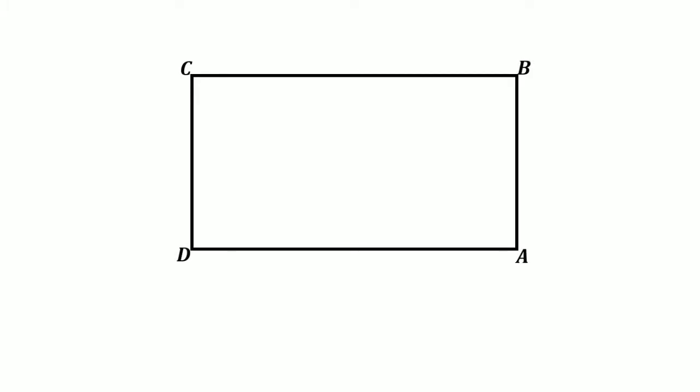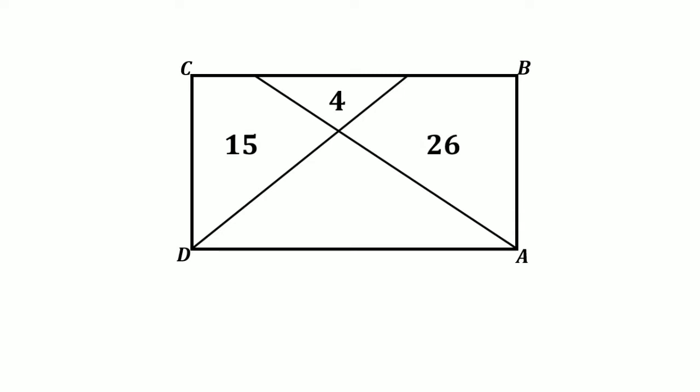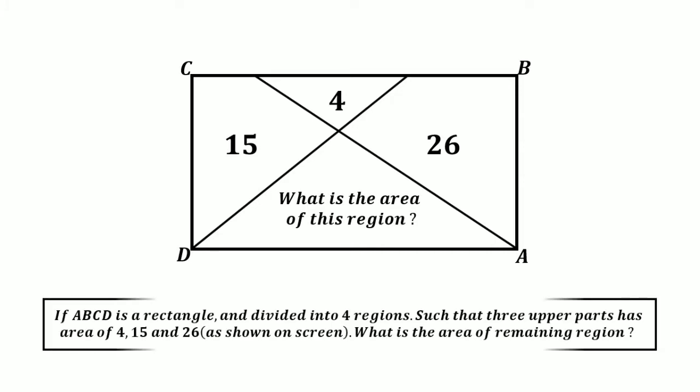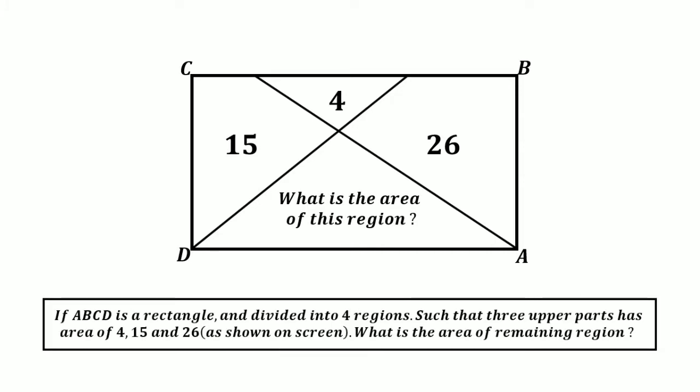Hi everybody, today I have an amazing question for you. Here is a rectangle ABCD. In this rectangle, draw a line from point A to line CB, and similarly draw a line from point D to line CB, such that the upper three parts have areas of 4, 15, and 26 as shown on the screen. What is the area of the remaining region? Please give your trial to this question and keep watching for the solution.